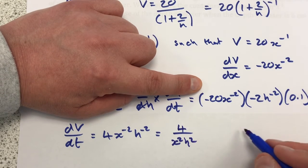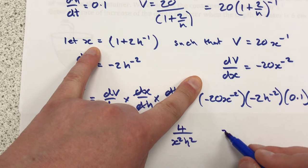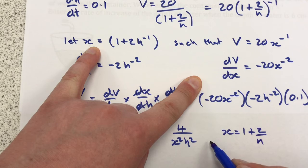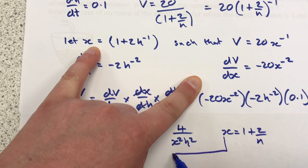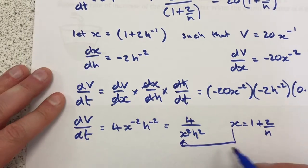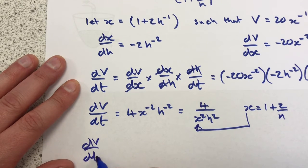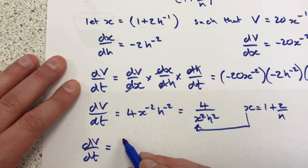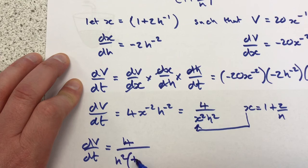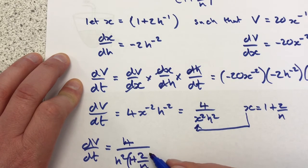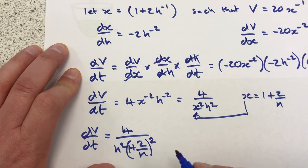And we need to substitute back in our value of x. x was equal to 1 plus 2 over h, effectively we need to put that back in there so that we end up with dV/dt equals 4 over h squared, open brackets, that's 1 plus 2 over h, 1 plus 2 over h, all squared.